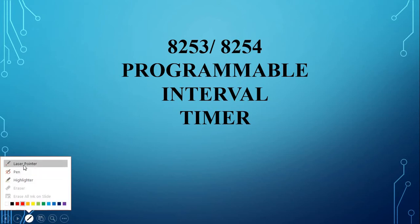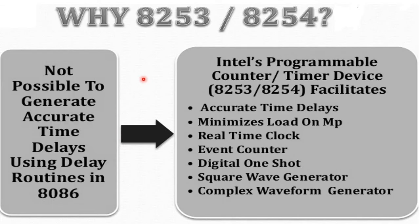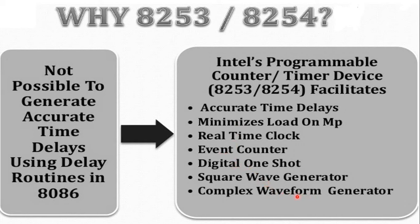The difference between 8253 and 8254 is: 8253 uses NMOS technology and does not support the read back command, whereas 8254 works on HMOS technology and supports the read back command. Also, 8254 is possible to generate accurate time delays, minimizes load on the microprocessor, provides real time clock, event counter, digital one shot, square wave generator, and complex waveform generator.